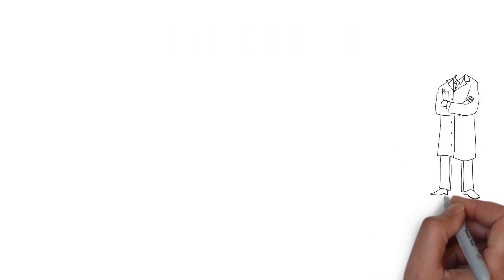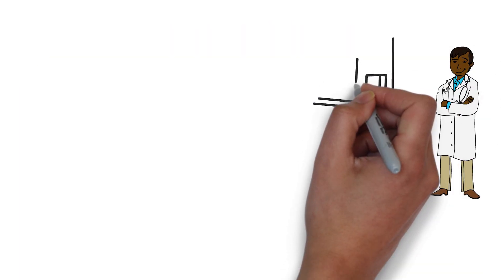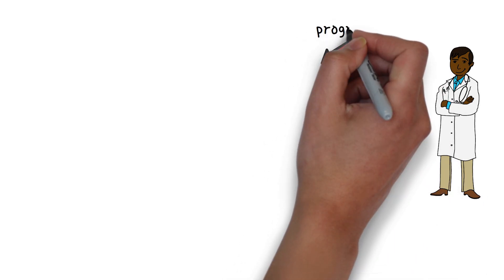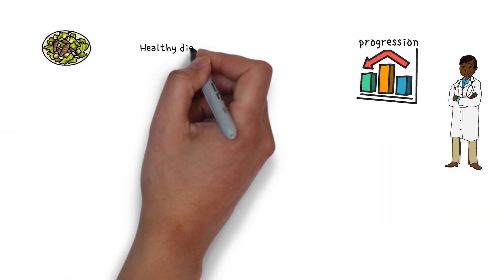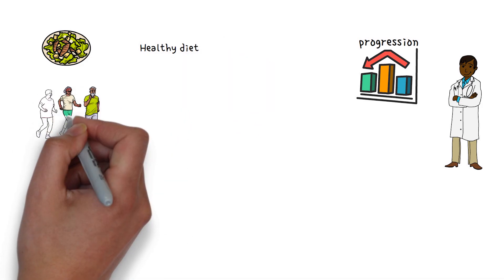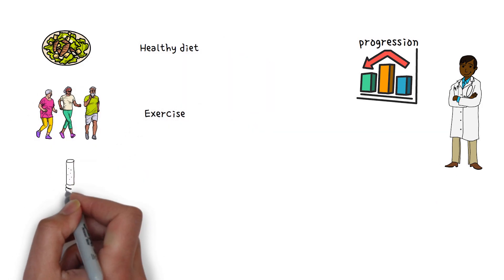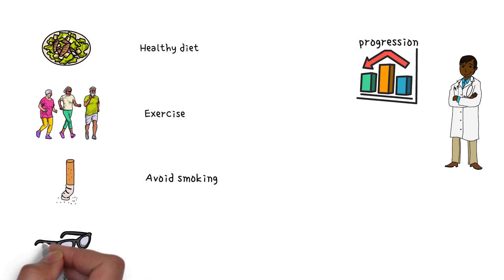There are things you can do to reduce your risk and possibly slow the progression once you've been diagnosed. For example, one can pursue lifestyle changes like dieting, exercise, avoiding smoking, and protecting your eyes from ultraviolet light.